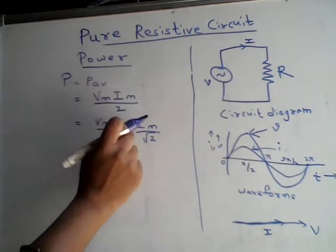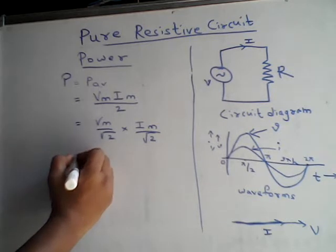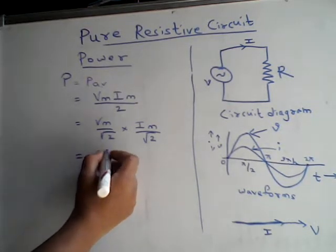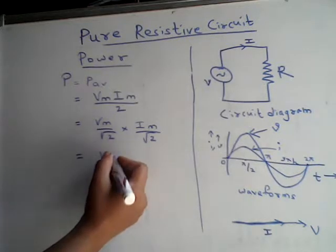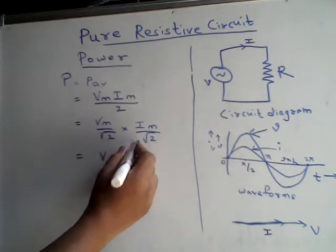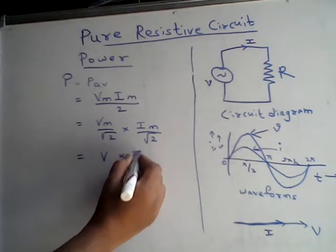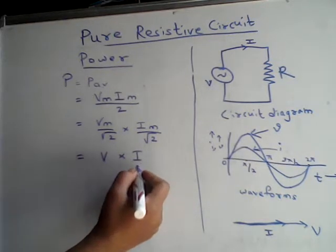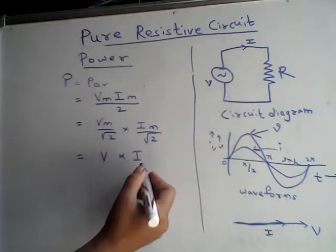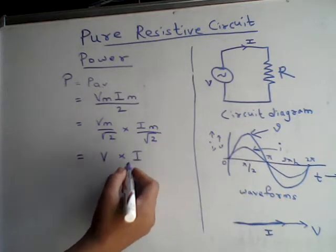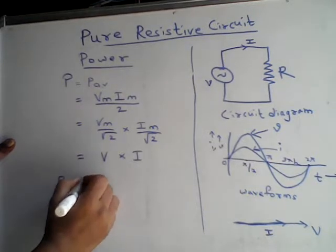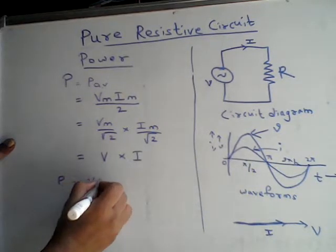Here Vm/√2 is the RMS value of voltage, and Im/√2 is the RMS value of current — also called the steady-state or effective value of the alternating quantity. So from this, we can say that power is nothing but V·I, that is the average power.